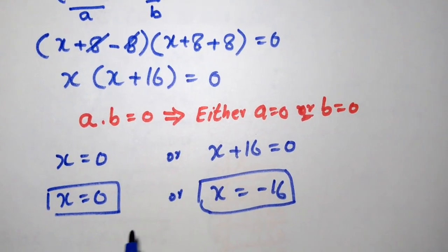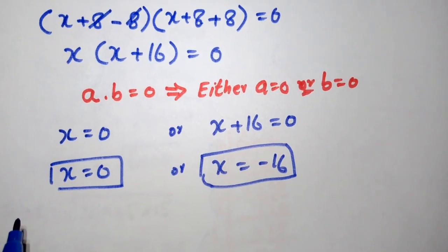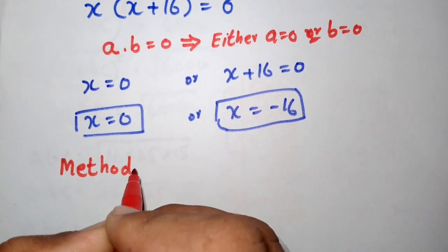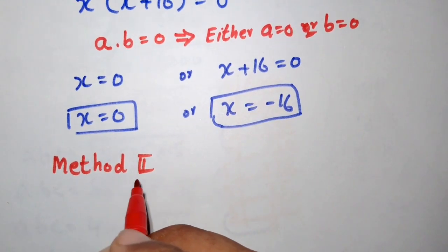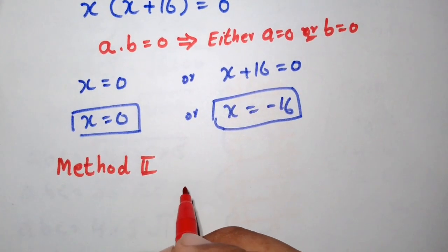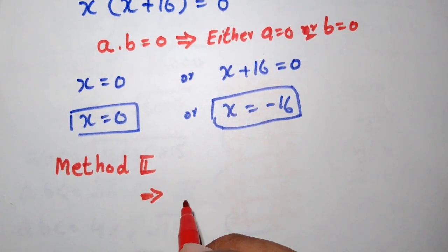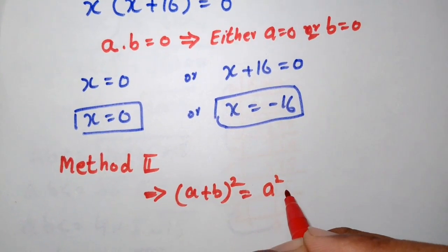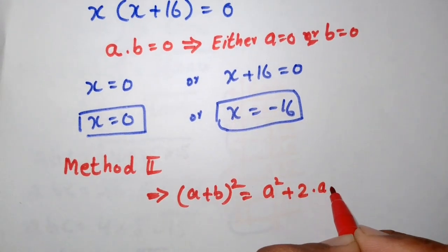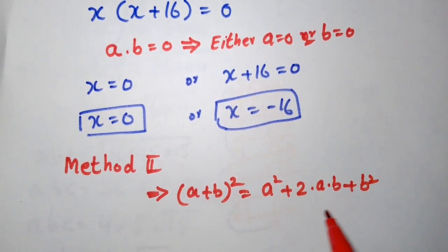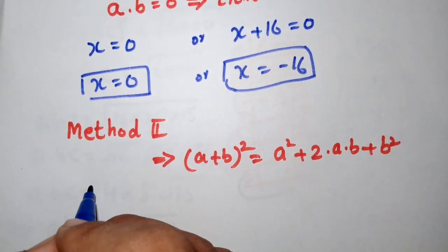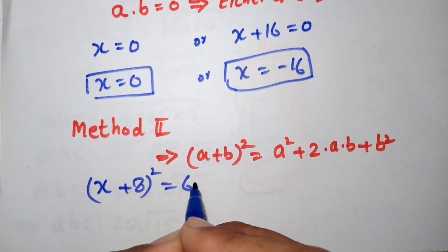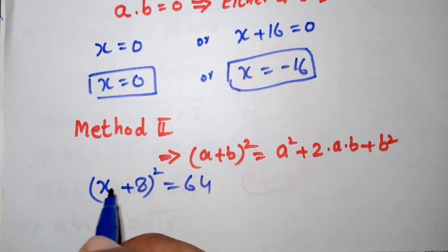Now we solve this question by Method 2. For Method 2 we use the formula (a + b)² = a² + 2ab + b². The question is (x + 8)² = 64, and we apply this identity.